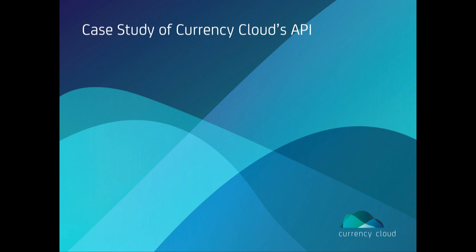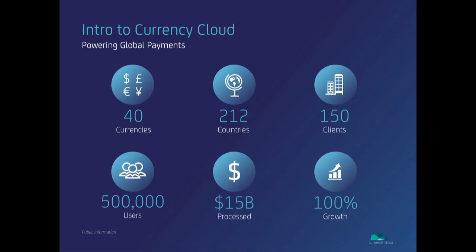Currency Cloud is an international payments company, and we try to make it easy for businesses to make payments across the world. We deliver our services primarily through an API. We're processing 40 currencies across 212 countries. We have 150 clients, and through them we access half a million end users. To date, we've processed $15 billion worth of payments.